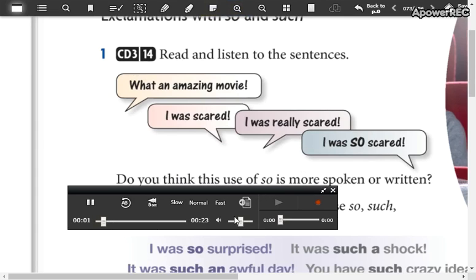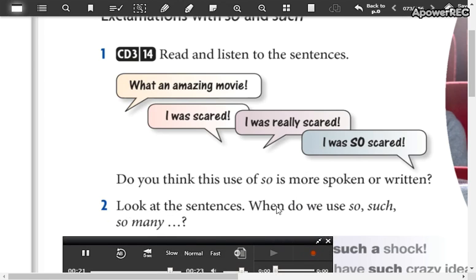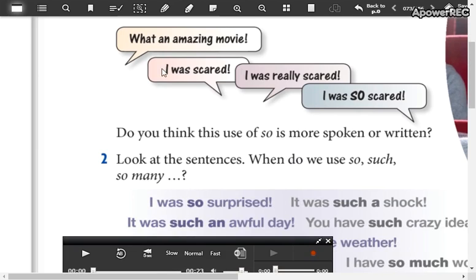Track 14, exclamations with so and such: What an amazing movie! I was scared, I was really scared, I was so scared. Notice, what an amazing movie - la película más sorprendente, no, qué película para sorprendente. I was scared, I was really scared, y aquí para intensificar también utilizó el so, I was so scared. So do you think this use of so is more for spoken or reading English?